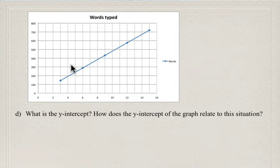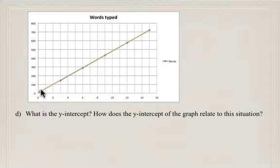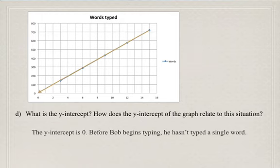And what we're asked to find next was to determine the y-intercept. And we're going to do this two ways here. The first way is just to extend the line so that it crosses the y-axis. And when you do this, you find that the y-intercept is zero. And so what this means is, this is how it relates to the situation. Before Bob begins typing, he hasn't typed a single word. So just as he's getting ready to start timing, he hasn't typed anything.